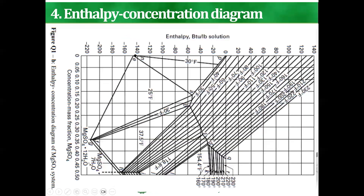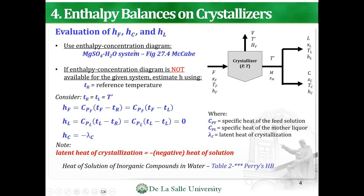So how do we evaluate? Let's use the enthalpy concentration diagram. If an enthalpy concentration diagram is not available for the given system, estimate H using this equation. So TR is the reference temperature, equal to T prime. HF, or enthalpy of the feed, is CPF times (TF minus TR), or CPF times (TF minus TL).